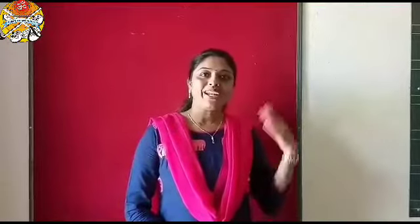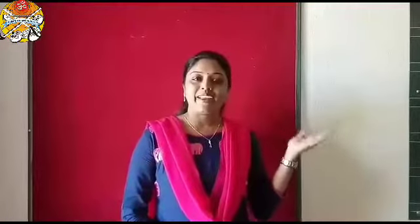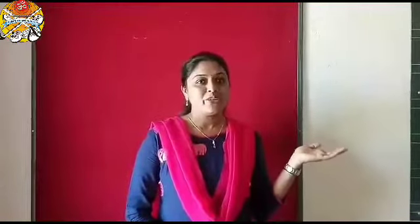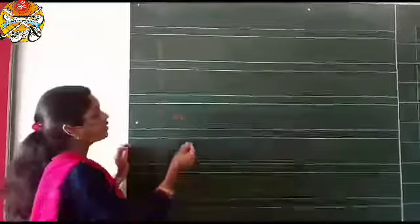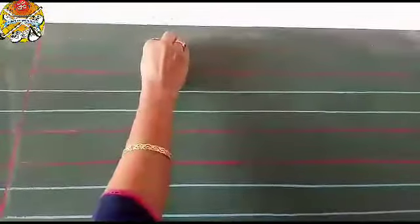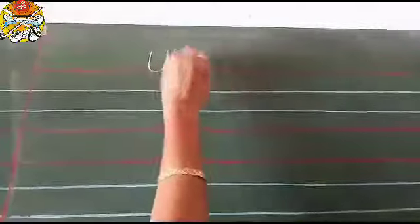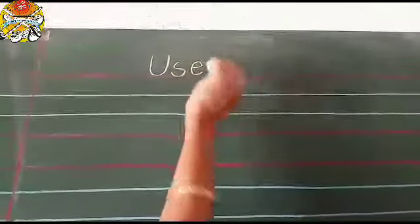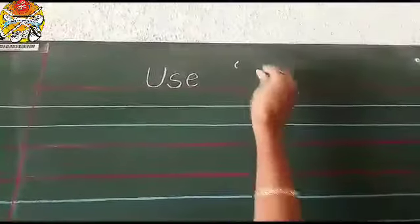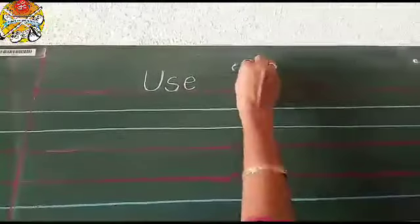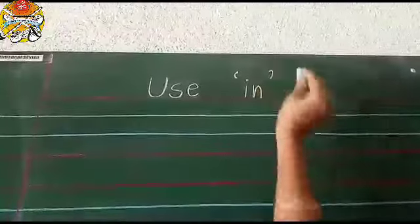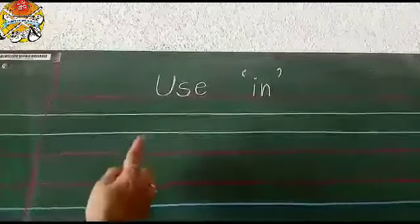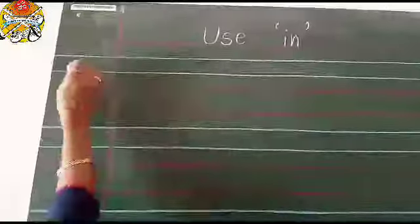Now let's draw pictures and write some sentences using 'in' in your English CW. First we will write our heading — use inverted comma open: I-N, 'in,' inverted comma close. So this is our heading: Use 'In.'